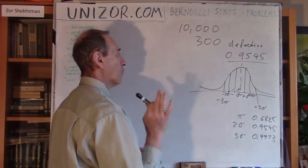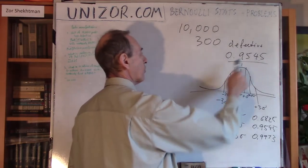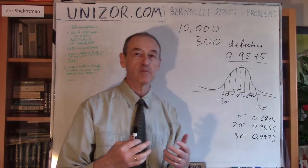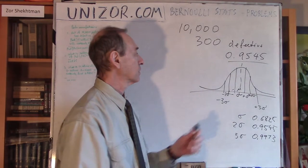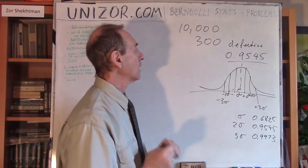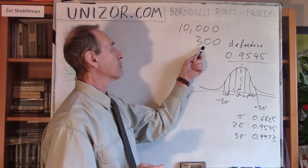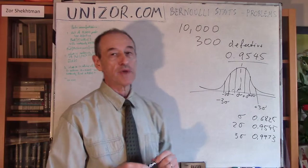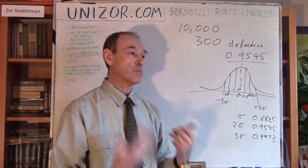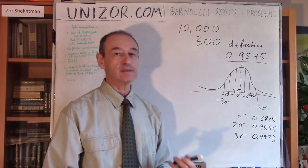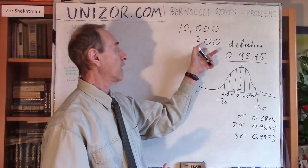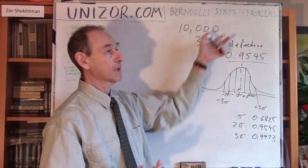That's the reason I chose this particular certainty level of 0.9545. My best approach for estimating the probability would be to divide 300 by 10,000, giving 0.03.